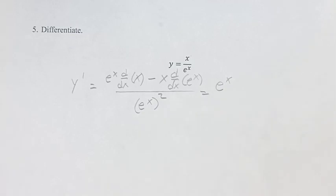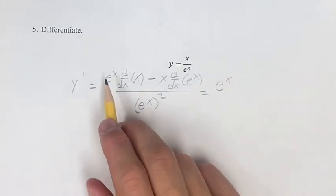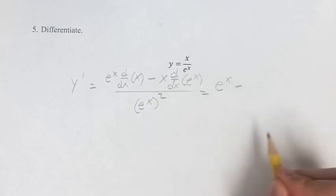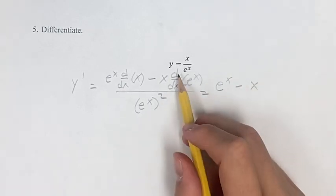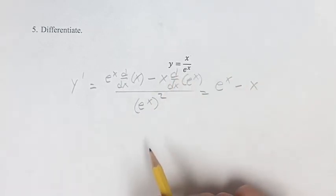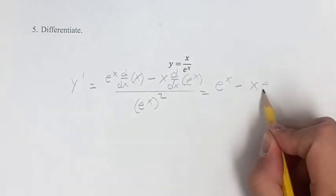So this is e to the x times 1, which is just e to the x, minus x times the derivative of e to the x. The derivative of e to the x is just e to the x, so this is x e to the x.